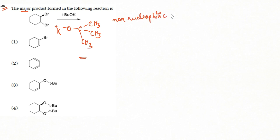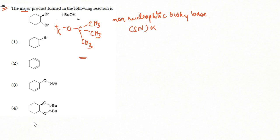Since the base is non-nucleophilic, it cannot give an SN2 or SN1 reaction — it cannot give a nucleophilic substitution reaction. So we can directly cancel out option number four, because there a nucleophilic substitution has happened, which is not possible here.